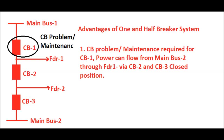What are the advantages of the one and half breaker system? First, consider a circuit breaker problem in CB1 — the main bus 1 side circuit breaker — or if CB1 requires maintenance. In this case, feeder 1 still gets power from main bus 2 via CB3 and CB2 in closed positions, and feeder 2 also gets power through main bus 2 via CB3. So if CB1 is under maintenance or has a fault, feeder 1 and feeder 2 still receive power from main bus 2 with no interruption.